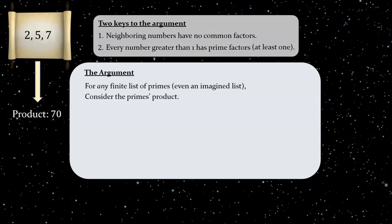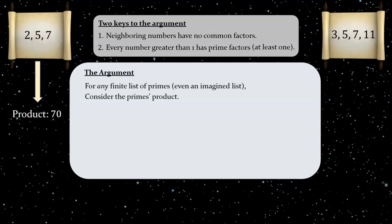Or, to give another example, if our list consists of the primes 3, 5, 7, and 11, we'll consider their product, which is 1,155. And of course we could, in principle, do this with any finite list of primes, even if the list consisted of trillions upon trillions of truly enormous primes. Anyway, all the primes on the list are factors of their product. This is obvious.